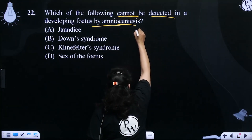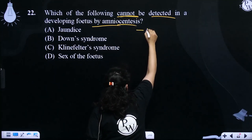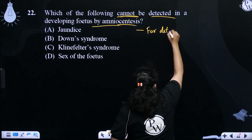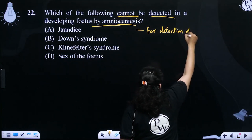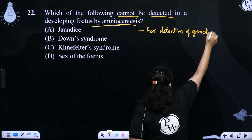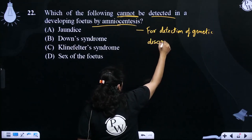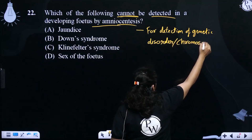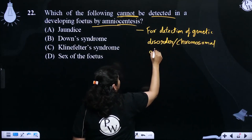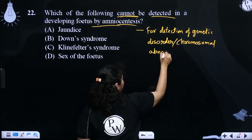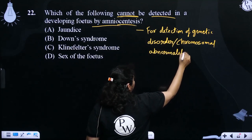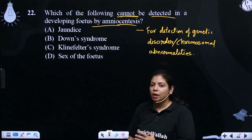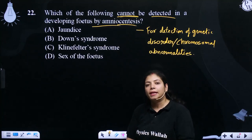The permissible use of amniocentesis is for the detection of genetic disorders and chromosomal abnormalities. So genetic disorders or chromosomal abnormalities can be detected by amniocentesis.